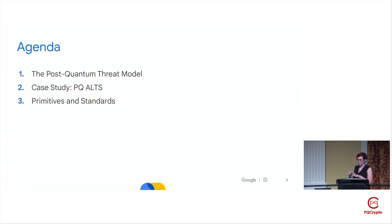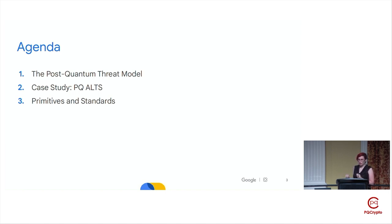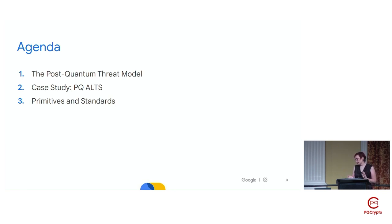I split this talk into roughly three sections. First, I'm going to revisit the threat model for PQC and look at how it applies in practice and what kind of caveats we might see in the industry. Then I will give a quick overview of a case study we did, where we had our internal encryption in transit and added quantum-safe cipher suites to that. And lastly, I want to talk a bit about how we think about things like standards and primitives, especially when it comes to signatures. I hope there's both something backward-looking and forward-looking in this talk, in particular talking about how we see post-quantum in the industry.